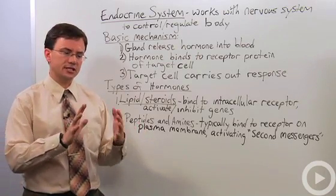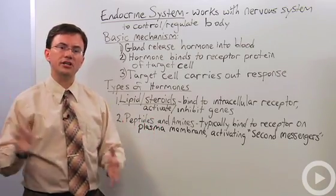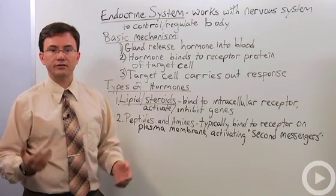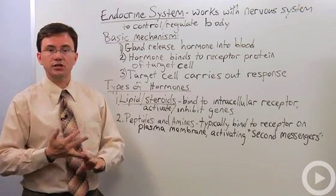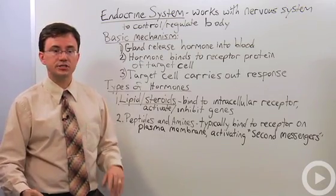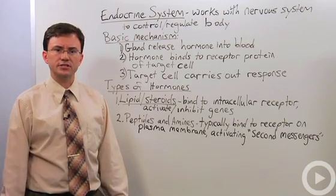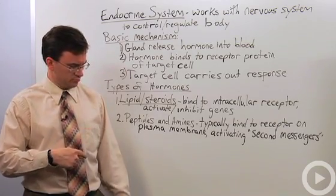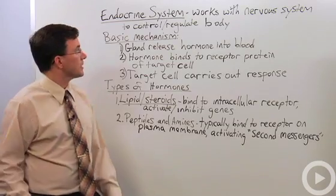The endocrine system tends to focus more on whole-body, longer-term regulation — regulating things such as growth and functioning of the immune system — as opposed to the nervous system, which is more specific, like "move this arm." Your hormone system doesn't do that.